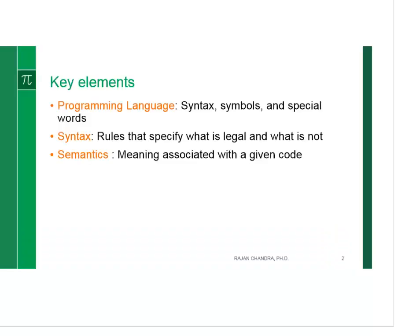Notice the key elements of any programming language are the syntax, the symbols, and the special words. Syntax tells us how to structure something correctly. For instance, A equal to B plus C is syntactically valid, whereas B plus C equal to A is syntactically incorrect. Semantics means the meaning associated with a given code. We will address this issue shortly.